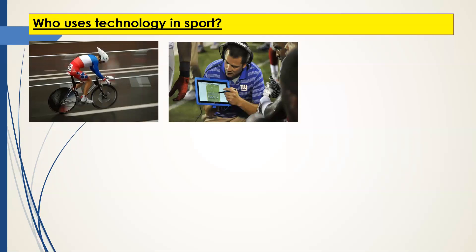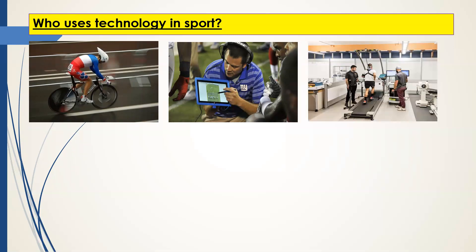Coaches — the people that work with the athletes and support them in their development. Sports scientists and analysts that help with the highest level of elite sport, looking for those tiny little changes that can be made in performance to actually make a difference at the very top level of sport. There's a huge amount of technology involved in that.